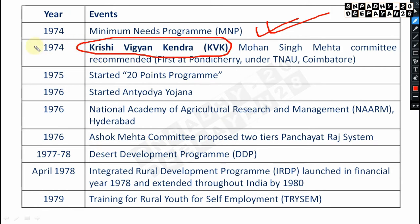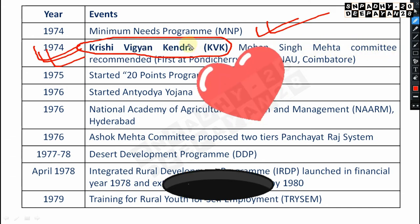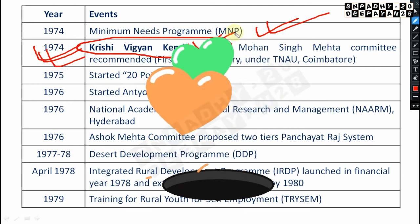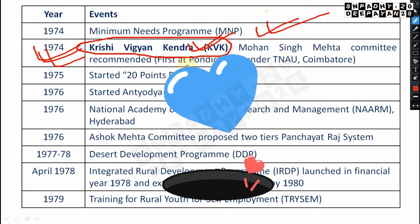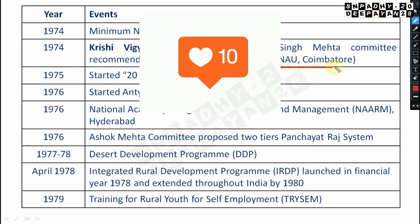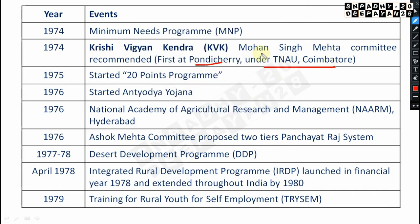In 1974, Krishi Vigyan Kendras (KVKs) were started based on the recommendation of the Mohan Singh Mehta Committee. The first KVK was established at Pondicherry under TNAU Coimbatore — very very important. In 1975, the 20 Points Program was started.